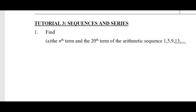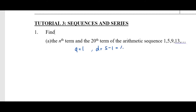We have the sequence 1, 5, 9, and 13. You can highlight the keyword 'arithmetic sequence' here. For an arithmetic sequence, we must determine the first term a and the common difference d. From the given sequence, a is equal to 1. Then d can be found by 5 minus 1, which equals 4, or 9 minus 5, or 13 minus 9.